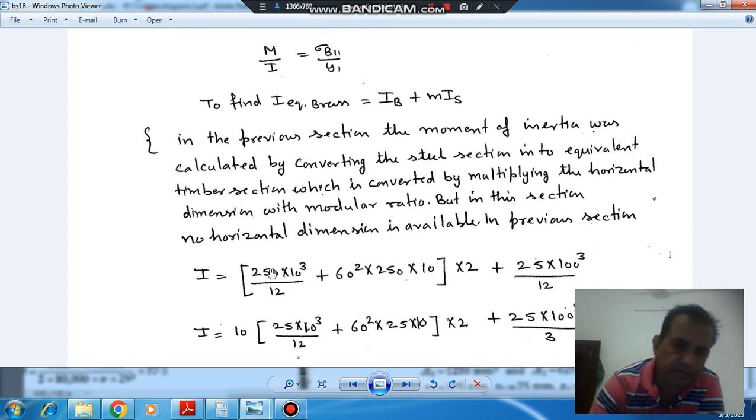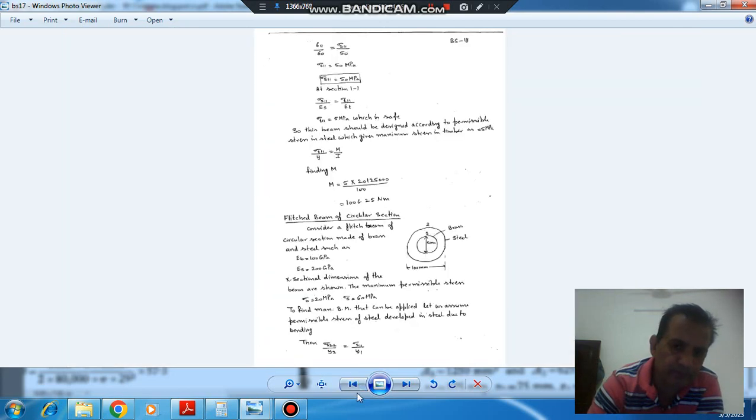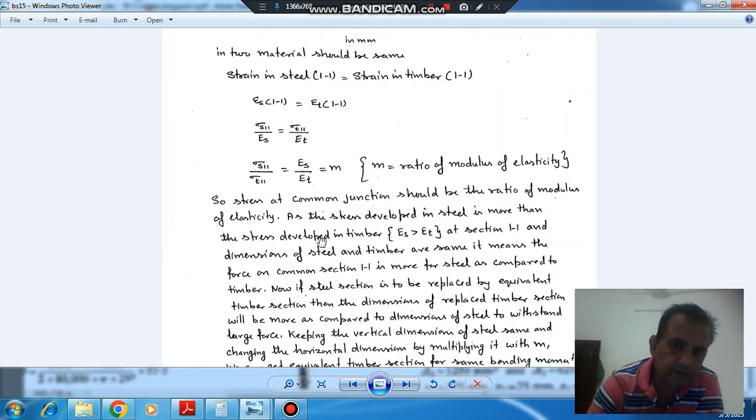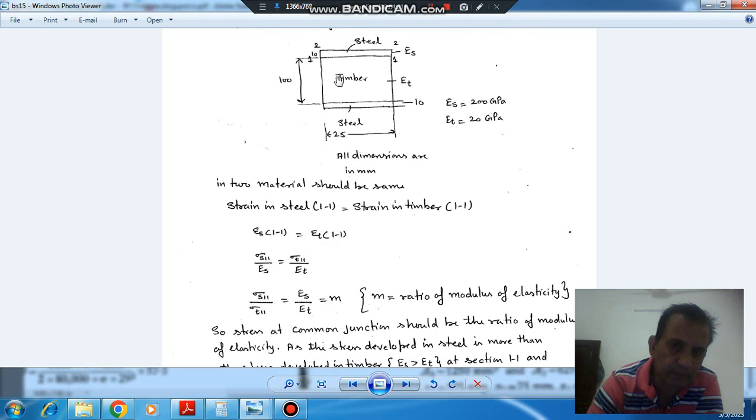So this has been derived by using the fact, here we have converted this beam, this composite beam of timber and steel into equivalent timber beam or equivalent inner section. So what we have done here, that we have made this dimension as 25 times 2 modular ratio, that is E_S by E_B, so that is 2t.